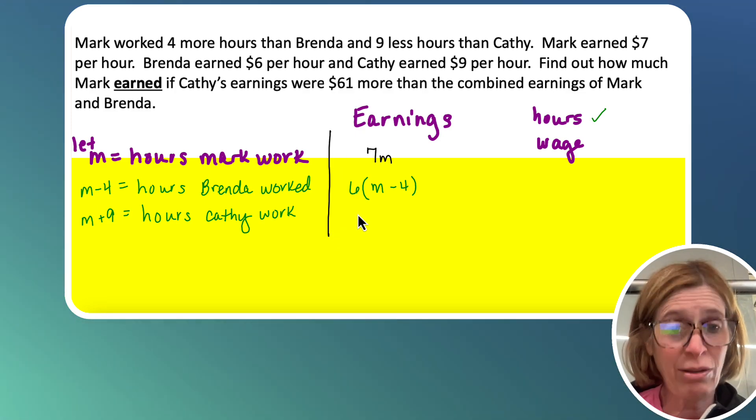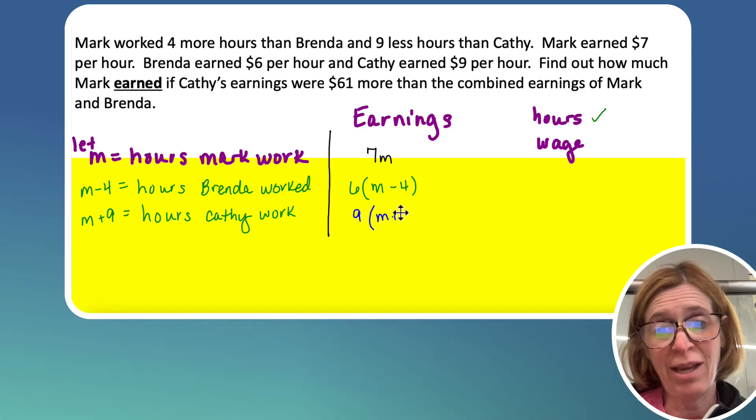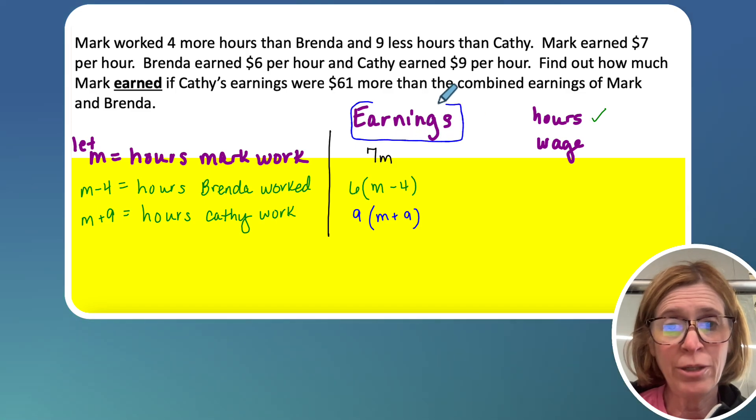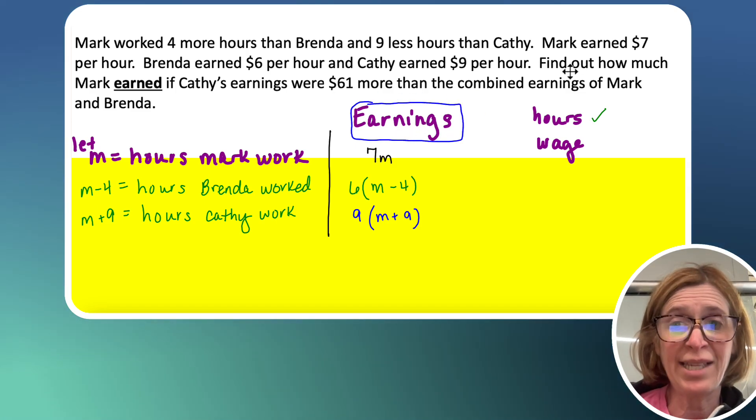Alright, and then Kathy, or nine dollars per hour, so I have to multiply nine times M plus nine. Okay, so now I have everything in terms of earnings, which is what the question's asking.